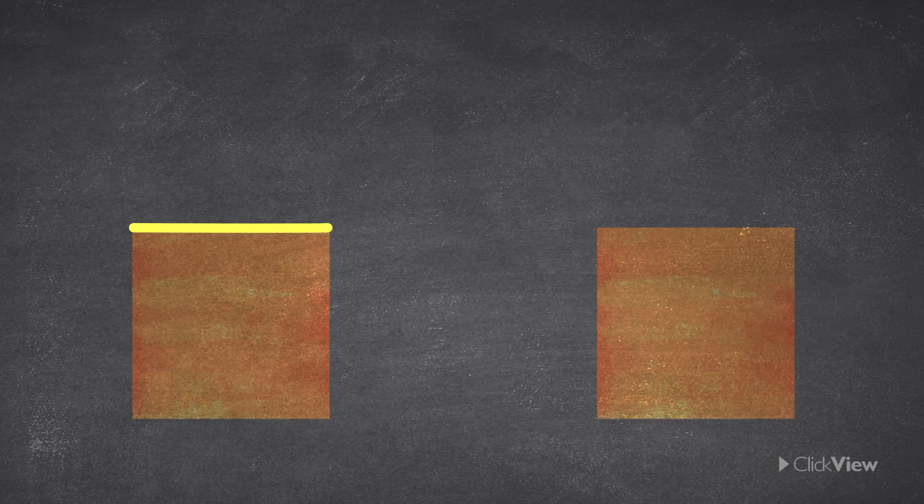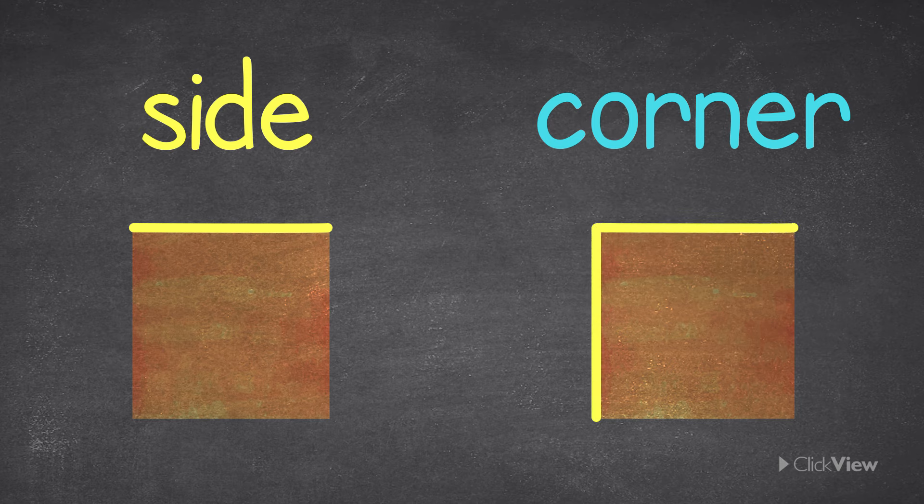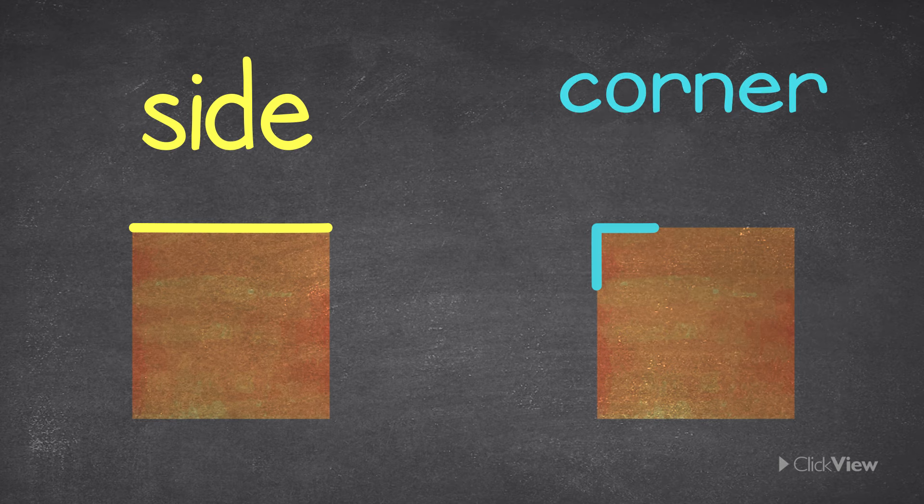A straight line in a 2D shape is called a side. A corner is where two sides meet. A corner can also be called a vertex.